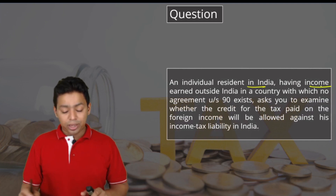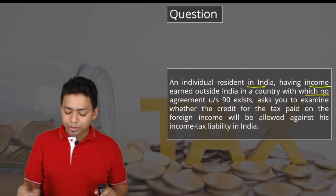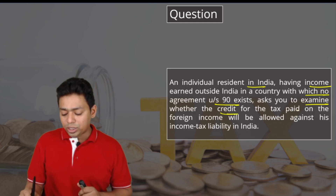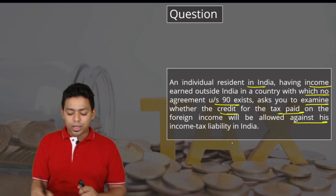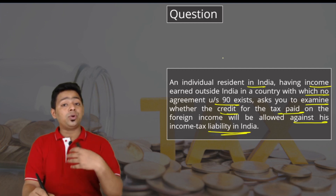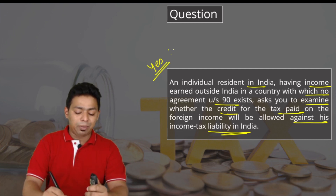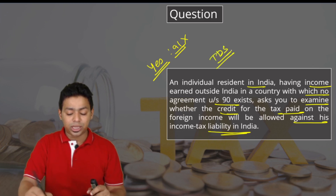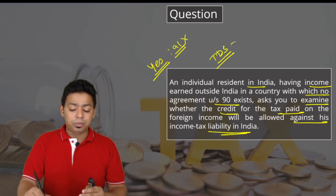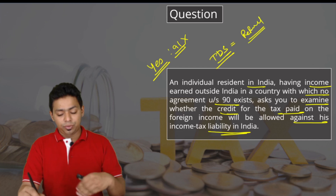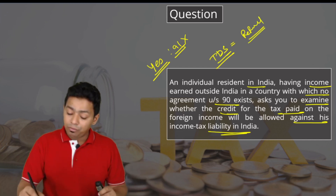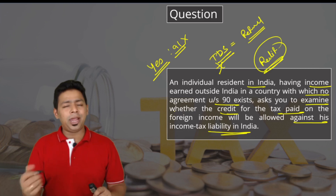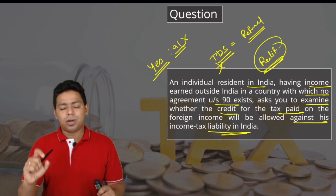An individual residing in India has income from outside India in a country with which India does not have an agreement under Section 90. The question asks whether credit for tax paid on foreign income will be allowed against Indian income tax liability. The majority might answer yes, credit is available under Section 91 — but Section 91 does not give credit. Credit means a TDS-type credit where you can even claim a refund. Section 91 gives relief, not credit — relief and credit are different, and this question is testing your understanding of the core law.